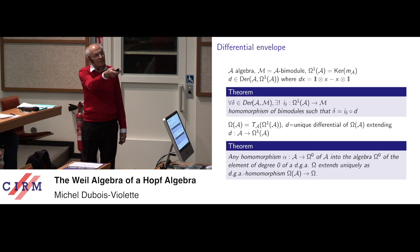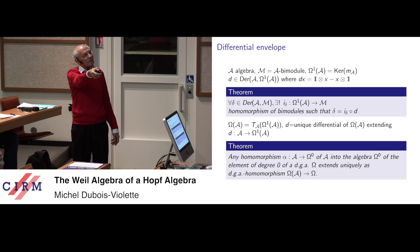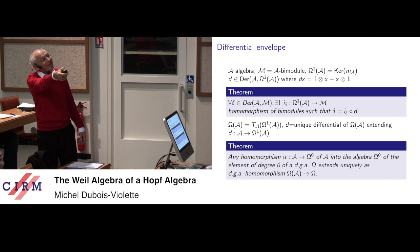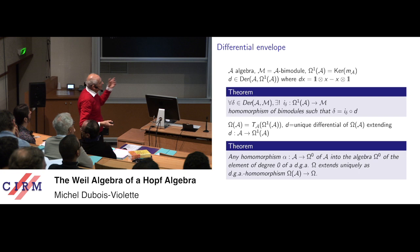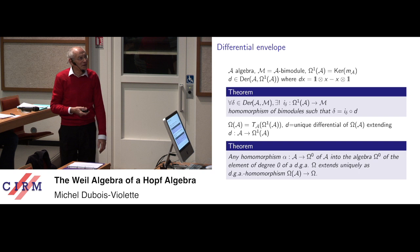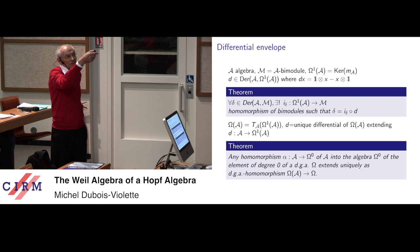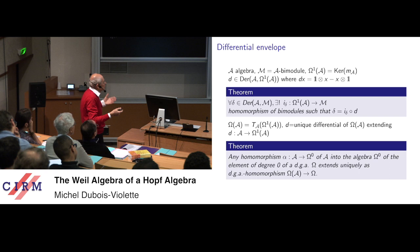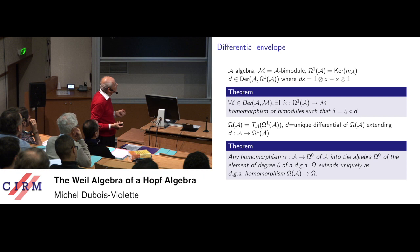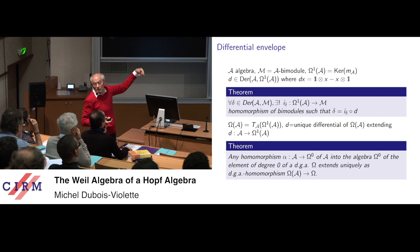I define a derivation by setting dx equals 1 tensor x minus x tensor 1. You verify easily that it is valued in Omega^1 of A, that its product is 0, and that it satisfies the Leibniz rule. You have the following theorem which characterizes this particular derivation as a universal initial object: namely, for any derivation of A in a bimodule M, there is a unique homomorphism of bimodule from Omega^1(A) into M such that the derivation factorizes through this homomorphism and d. I call this the universal derivation.